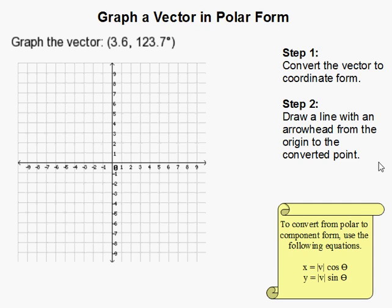How to graph a vector in polar form. Now we have a vector and it's written out with magnitude and direction here.